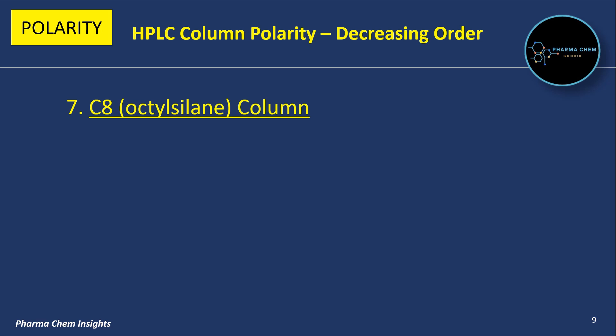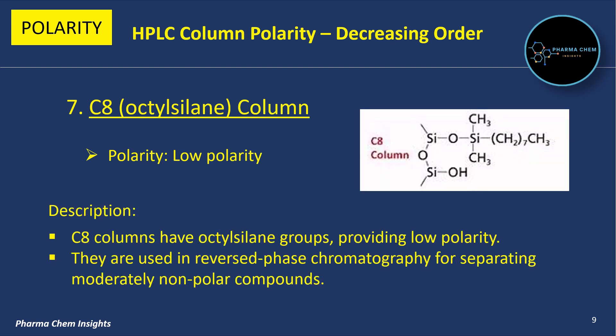Seventh is C8, that is the Octylsilane column. C8 columns are low polar. They have octylsilane groups providing low polarity and are used in reverse phase chromatography for separating moderately non-polar compounds.